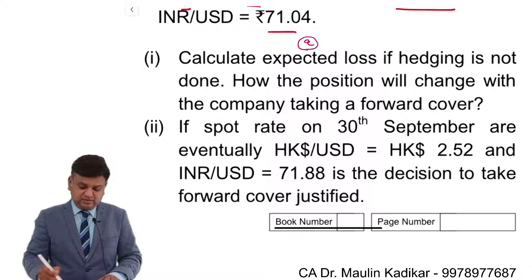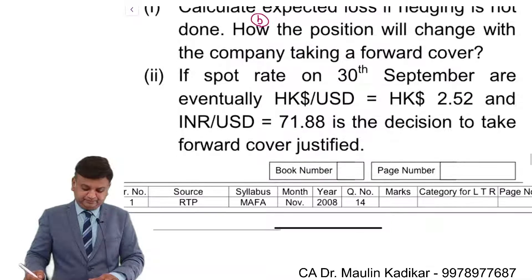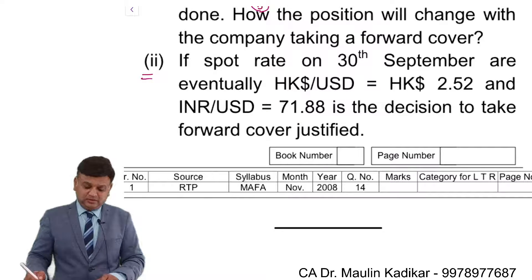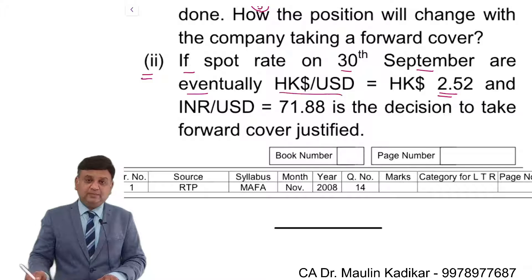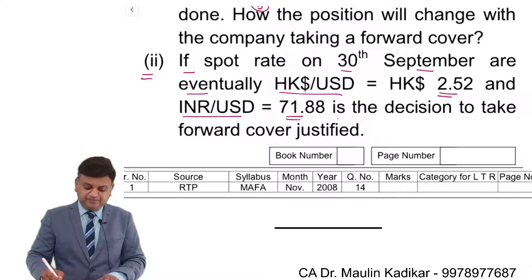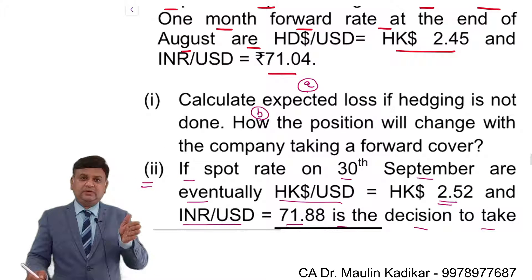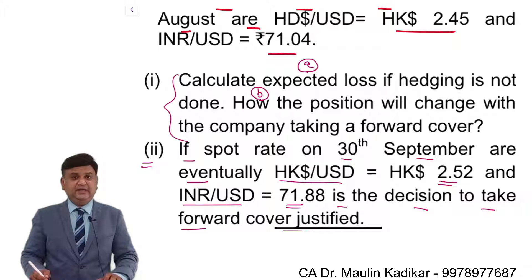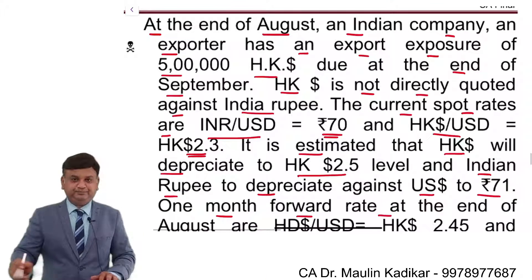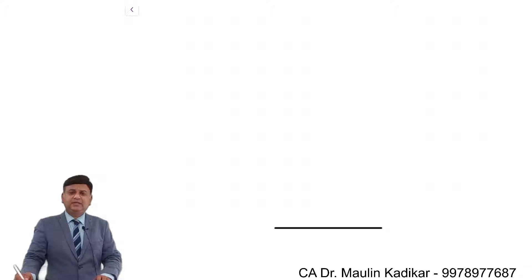It is estimated that Hong Kong dollar will depreciate to 2.5 HKD per dollar, and Indian rupee will depreciate to 71 rupees per dollar. One month forward exchange rates at end of August are 2.45 HKD per dollar and 71.04 rupees per dollar. Calculate: (a) expected loss if hedging is not done, (b) how position will change if company takes forward cover.